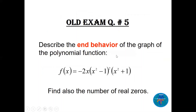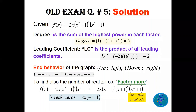Now let's describe the end behavior of this next function. We also need to find the degree, the leading coefficient, and the number of real zeros and x-intercepts. The function is already factored. Adding the powers: 1, plus 4 (for x squared whole squared), plus 2 gives degree 7. The leading coefficient is the product of all leading coefficients, which is minus 2.